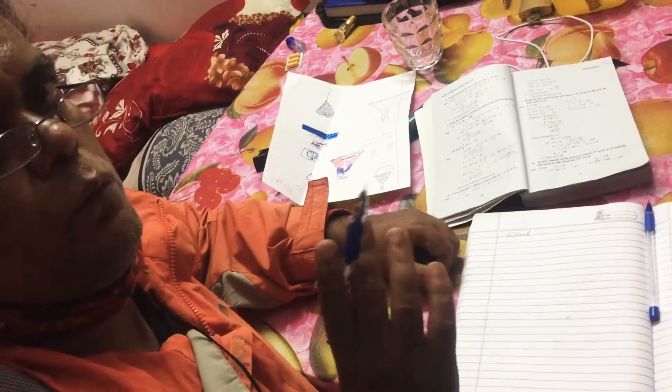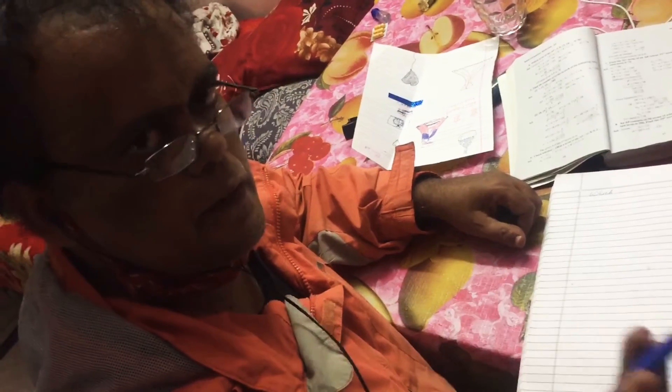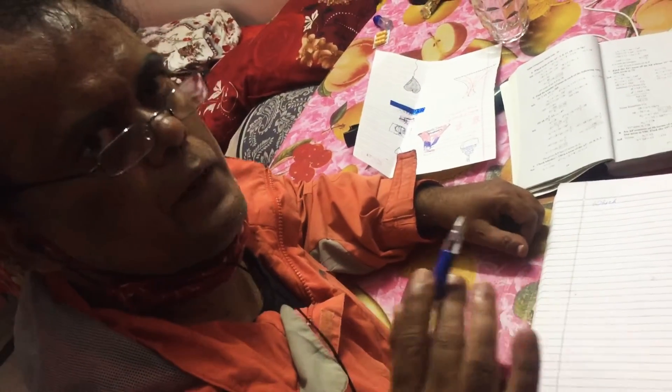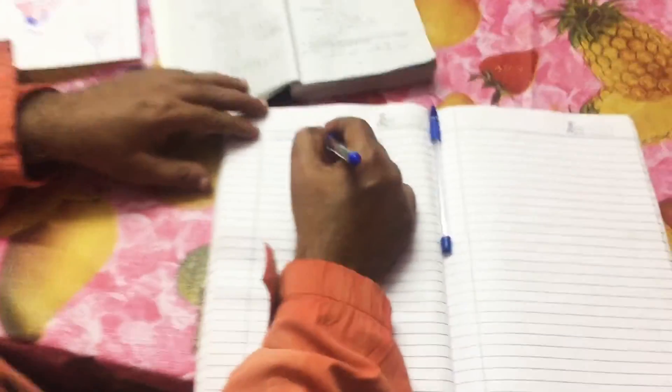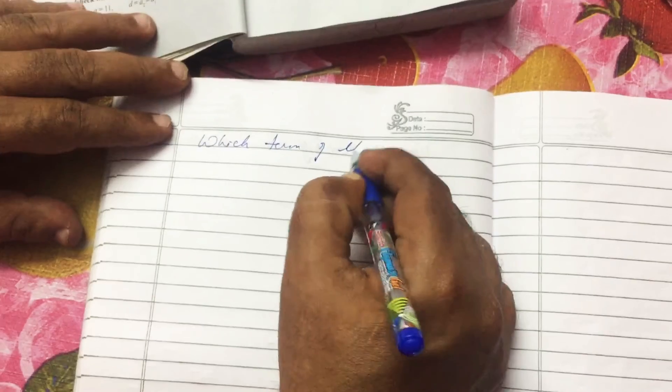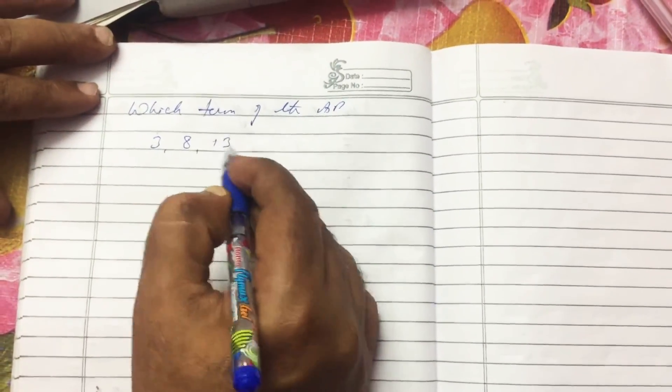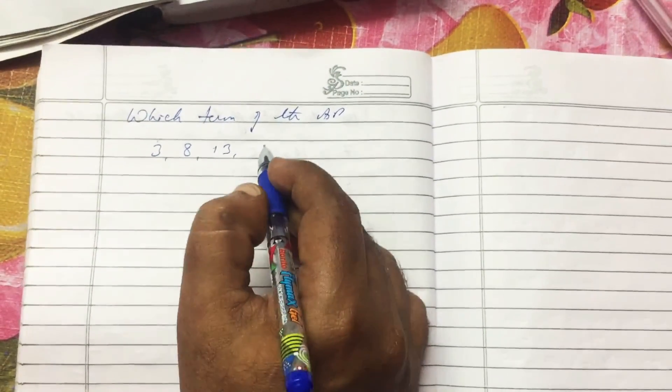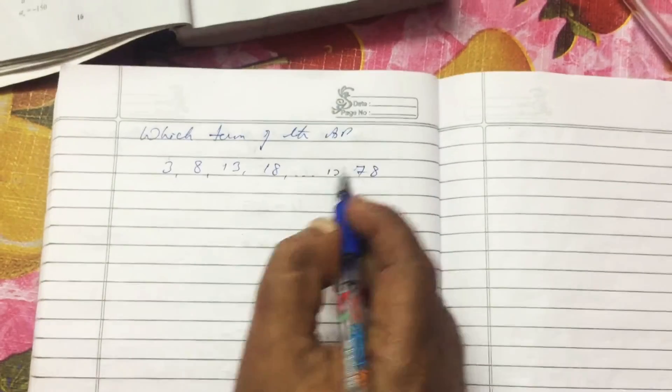In this one, which term of the AP will be given where the first term is given, the last term and the common difference. Let's find N or the nth term. Now, which term of the AP 3, 8, 13, 18... is 78?